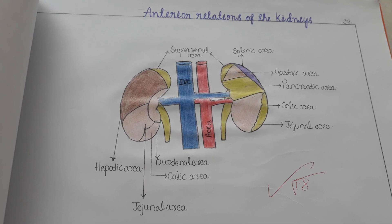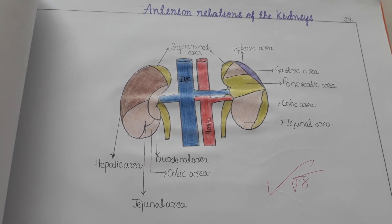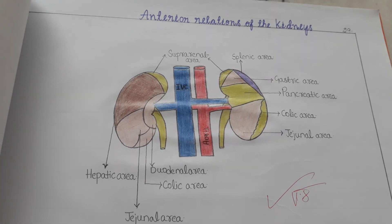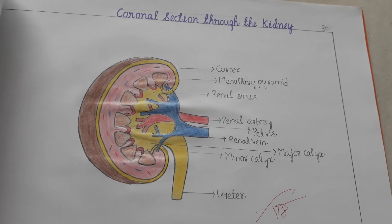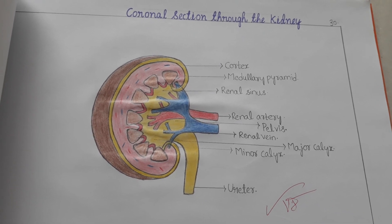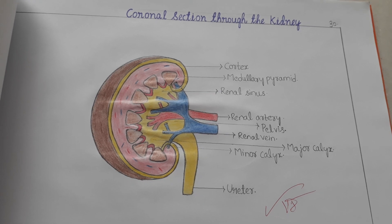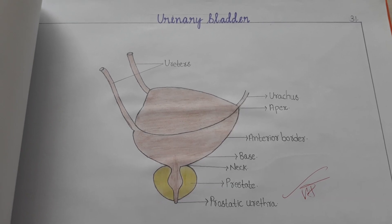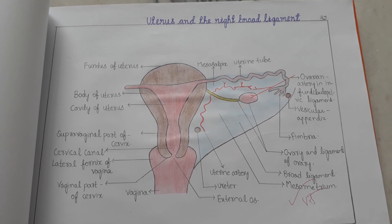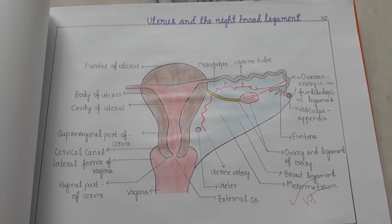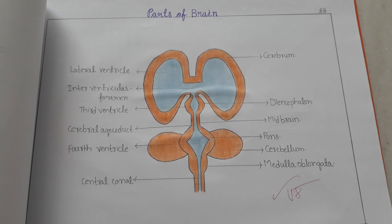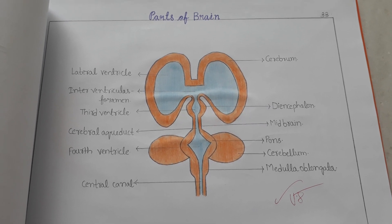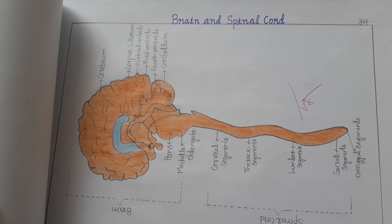Anterior relations of the kidneys. This is the coronal section through the kidney and urinary bladder. Parts of the brain — even this can be kept as a spotter. You can see the brain and spinal cord.